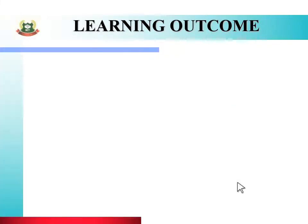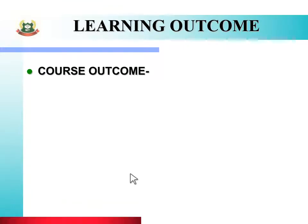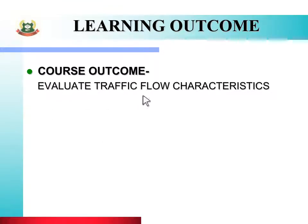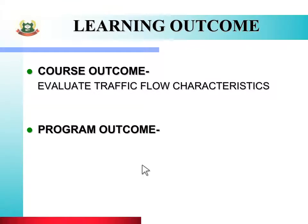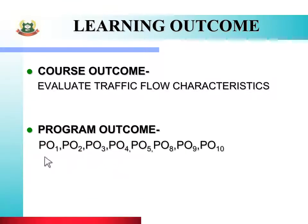Unit Learning Outcome: in this we will see course outcome, program outcome, and unit outcome. यह unit पढ़ने के बाद आपको इस topic से related किस बात का knowledge मिलेगा और practically यह knowledge आप कहाँ apply करोगे, let us see. Course outcome: evaluate traffic flow characteristics — traffic flow की विशिष्टता क्या है, इस बारे में आपको जानकारी मिलेगी।